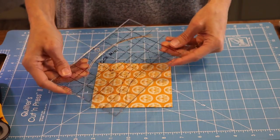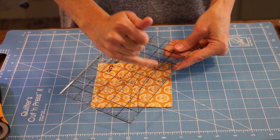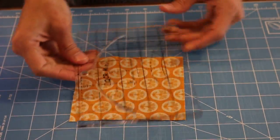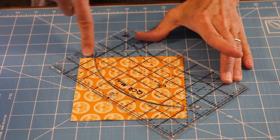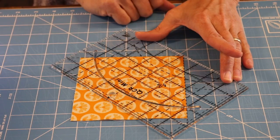And then on the ruler there are some dashed lines, and those dashed lines sit on the edges of these two sides on my two five-inch squares.